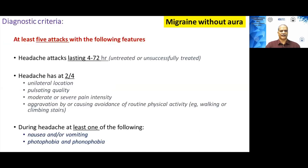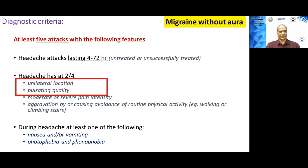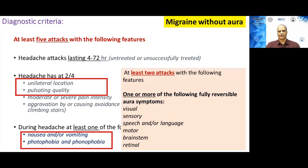Coming to migraine headaches, there are strict criteria for diagnosis. The headaches must last at least 4 to 72 hours, and the patient must have had at least five attacks before labeling them as having migraine. Other important features include unilateral location, pulsatile quality, and associated features like nausea, vomiting, photophobia, and phonophobia. If the patient has had at least two attacks with aura — which can be visual, sensory, motor, or brainstem — it is migraine with aura; otherwise, it is common migraine without aura.